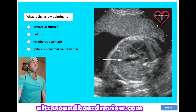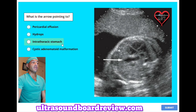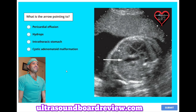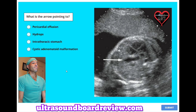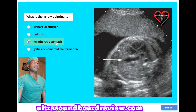What is the arrow pointing to? A, pericardial effusion. B, hydrops. C, intrathoracic stomach. Or D, cystic adenomatoid malformation. The answer is C, intrathoracic stomach.